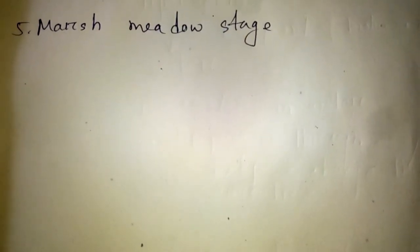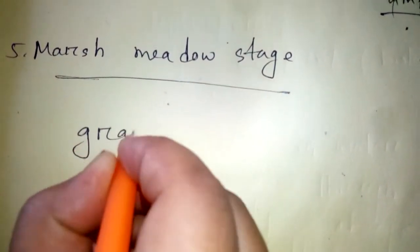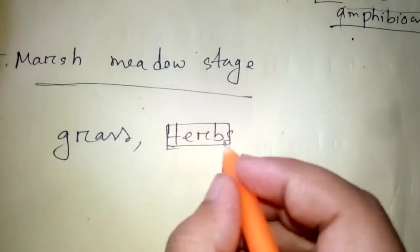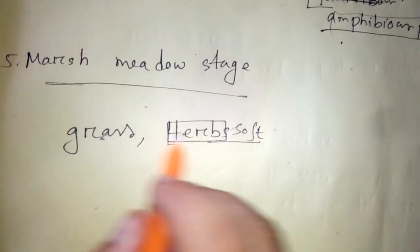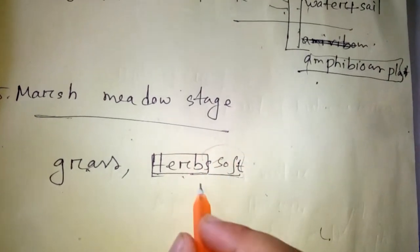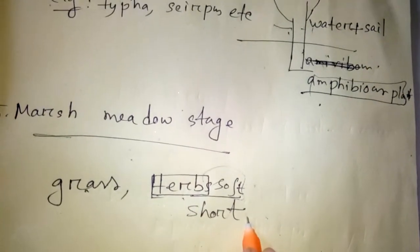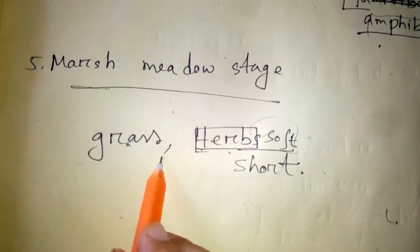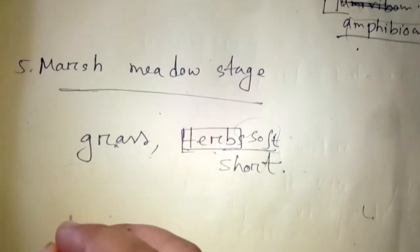Number five is marsh meadow stage. The example of marsh meadow is grass or herbs. We know herbs are very soft and very short. They are mainly terrestrial and grow when humus in the soil is abundant.